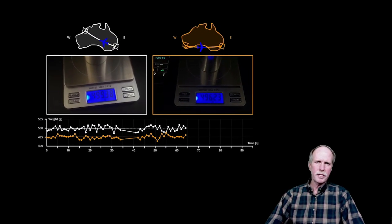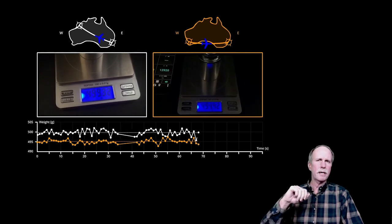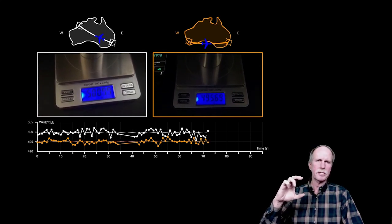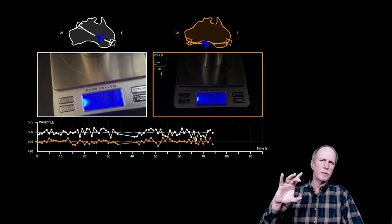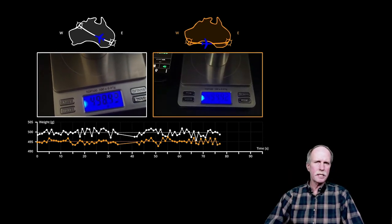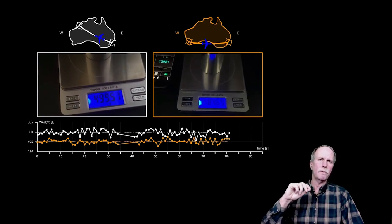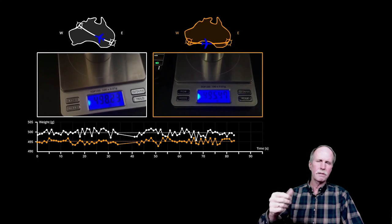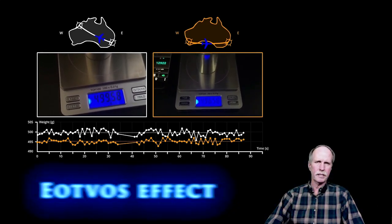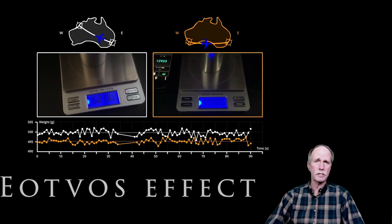If you were to take a mass — say a 500 gram mass — and measure it on a calibrated precision spring scale, it will say that it weighs 500 grams. However, if you take it into an airplane, it will have a different weight depending on whether you are flying west or east. This is called the Eötvös effect, and it is well described and understood on a rotating spherical Earth.